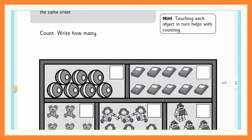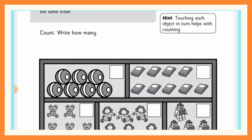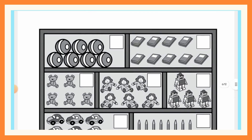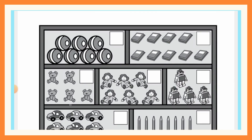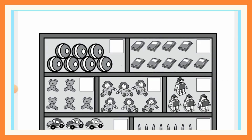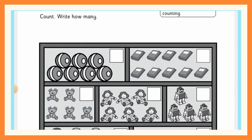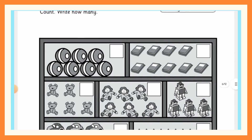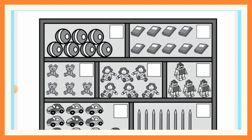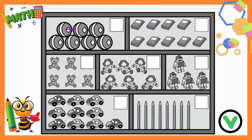Another hint they give us is that touching each object in turn helps with counting. In the toy cupboard we can see balls, books, teddy bears, dolls, robots, cars, and pencils. We need to count each of them and write the answer in the box. When you touch each object it helps you count — for example 1, 2, 3 — because if you don't touch them you might forget whether you already counted something.